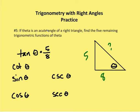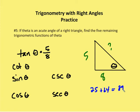The next question asks us to find the 5 remaining trig functions given that tangent of theta is 5 over 8. In this case, we need to find the hypotenuse. We again use the Pythagorean theorem: 5 squared (which is 25) plus 64 is equal to the hypotenuse squared. So the hypotenuse squared is going to be equal to 89.